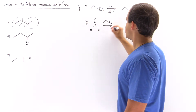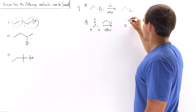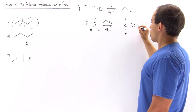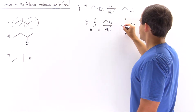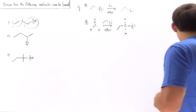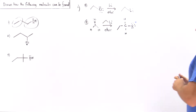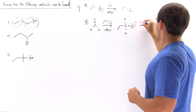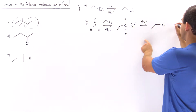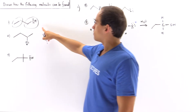After reacting with the organolithium reagent, we form an intermediate with two H's and an oxygen carrying a negative charge — this is our alkoxide. In the next step we add water, which protonates the oxygen on the alkoxide, and we form the desired alcohol product.